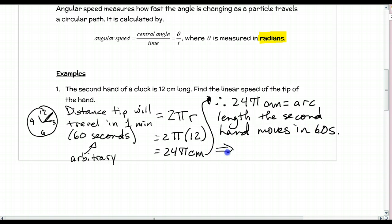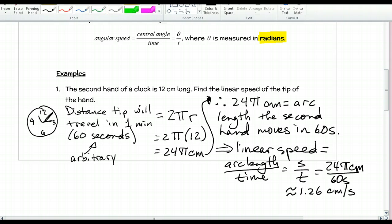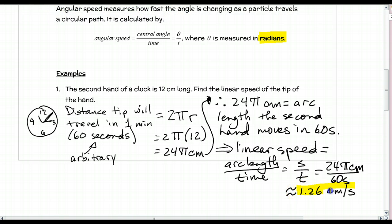Linear speed is arc length divided by time, s over t. Our s is 24π centimeters divided by 60 seconds, which gives about 1.26 centimeters per second. That's the linear speed of the tip.